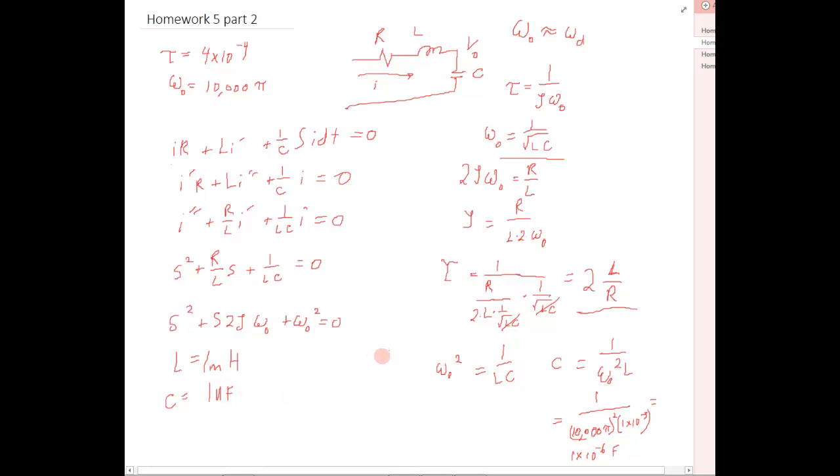And now what we have left is to solve for R. So we know tau, we know our L, we can solve for R. So our resistor value is going to be equal to 2L over tau, which is 2 times 1 times 10 to the minus 3rd over 4 times 10 to the minus 4th, which is just going to be equal to 5. So our R is going to equal 5 ohms.